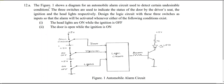The question shows a diagram for an automobile alarm circuit used to detect certain undesirable conditions. Three switches indicate the status of the door by the driver's seat, the ignition, and the headlights respectively. Design the logic circuit with these three switches as input so that the alarm will be activated whenever either of the following conditions exist.